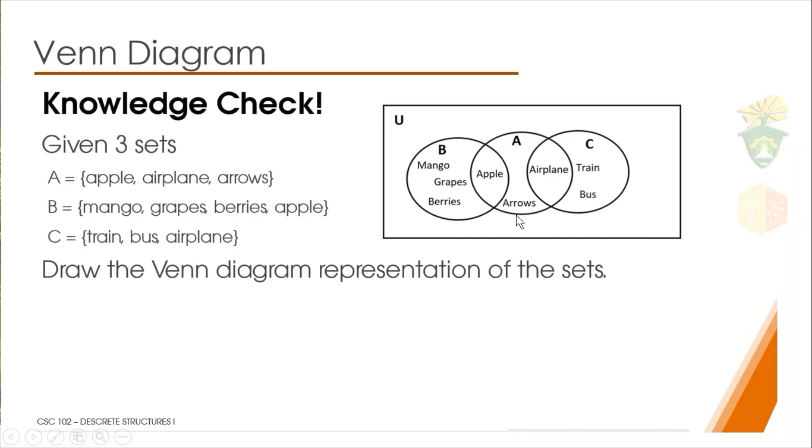The answer is this one, see here. If you represent these three sets, as you can see, we first need to find those common elements. The common elements from set A and set B is the apple, right? Both sets have element apple. While A and C have both elements, that is A and C have airplanes on them.